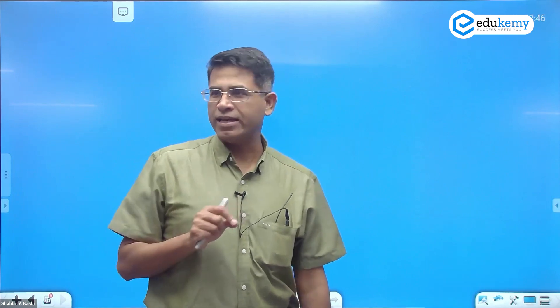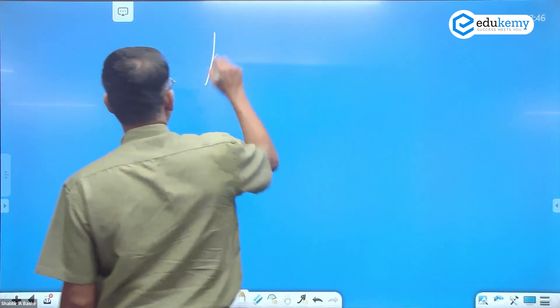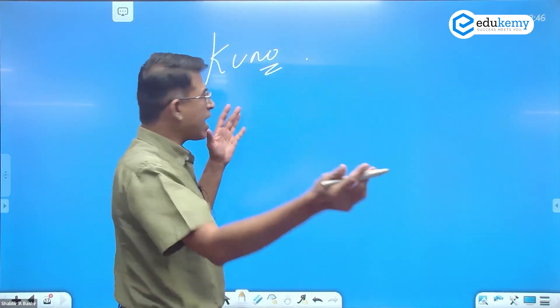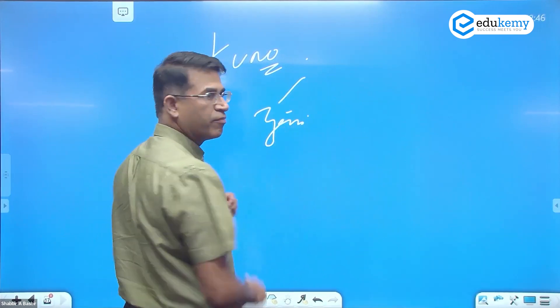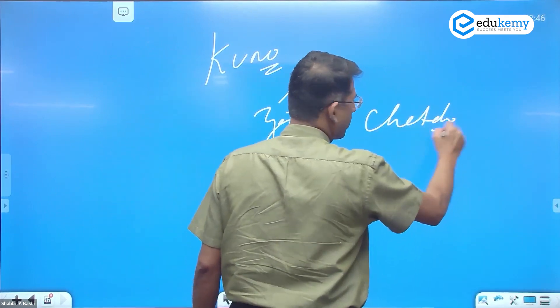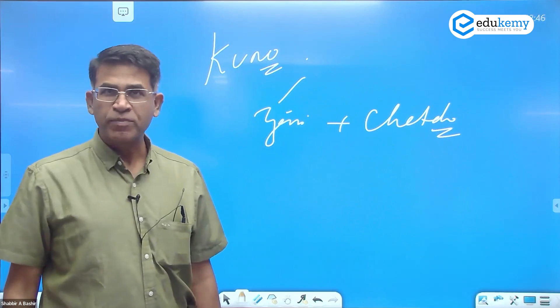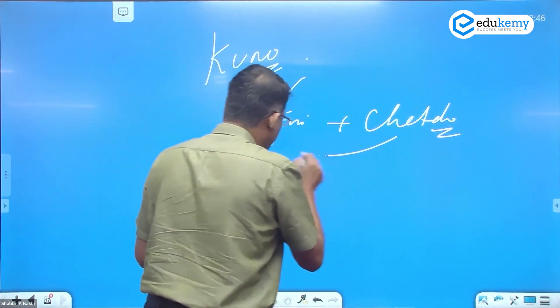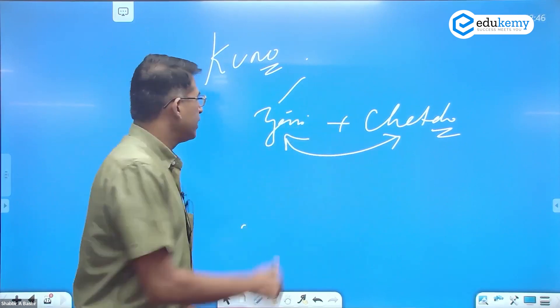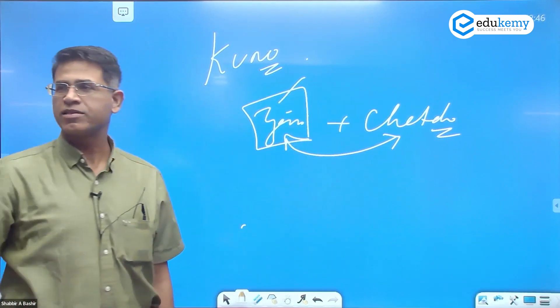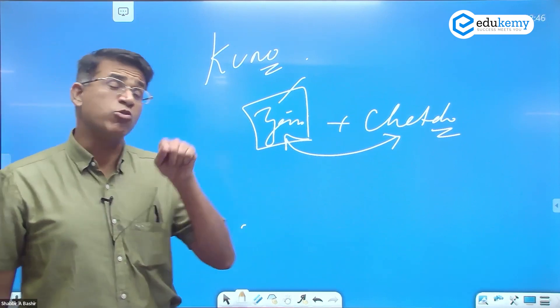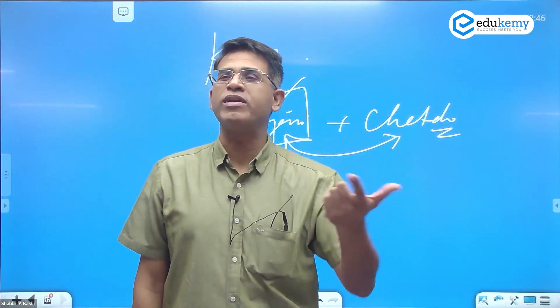For example, you know about the Kuno National Park. For a long time, we have had tigers here. Now you have added cheetahs. Now it's possible there can be conflict, because that ecosystem is actually for the tigers. Where will the balance happen? We do not know. That's why when you introduce something, you must be very careful what you are doing there.